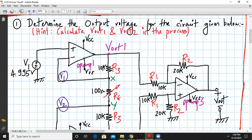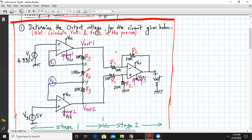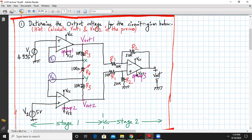So basically this is our circuit which is given. We have to determine the output voltage for the circuit given below. As you can see clearly this is my 3 op-amp instrumentation amplifier. We have to calculate Vout1 and Vout2 in the process and here the inputs are given as DC values. V2 is 5 volts, V1 is 4.995 volts, and all the resistor values are given to us.